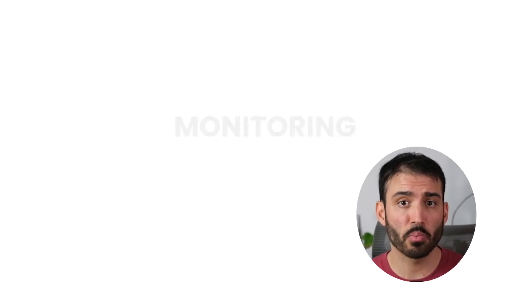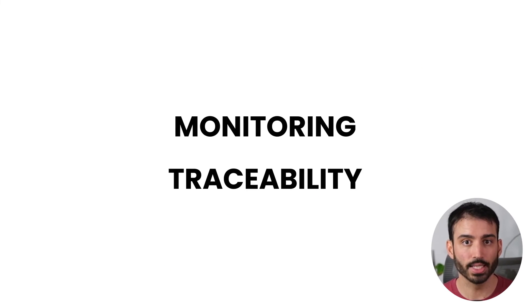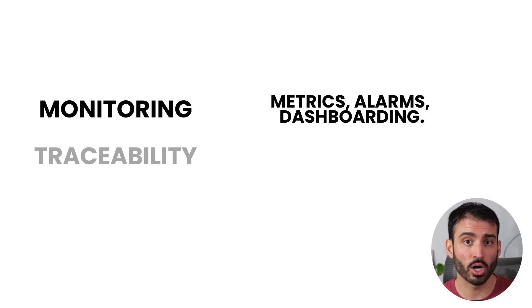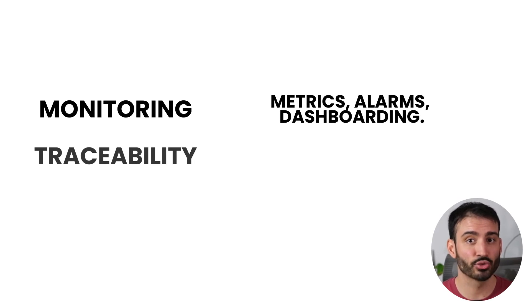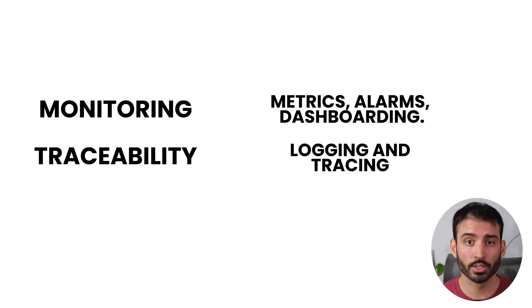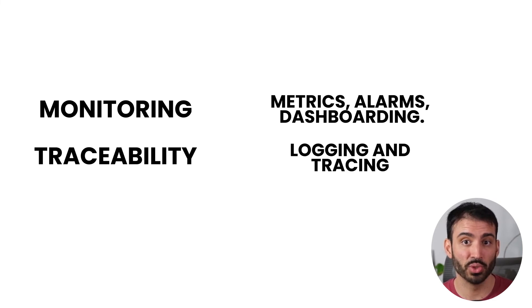So to recap, we've learned about several monitoring and traceability techniques. In monitoring, we outlined the need for metrics, alarms, and dashboarding. In traceability, we learned about the need for logging and tracing. To show how these concepts can be tied together in real life, consider the following system failure example.